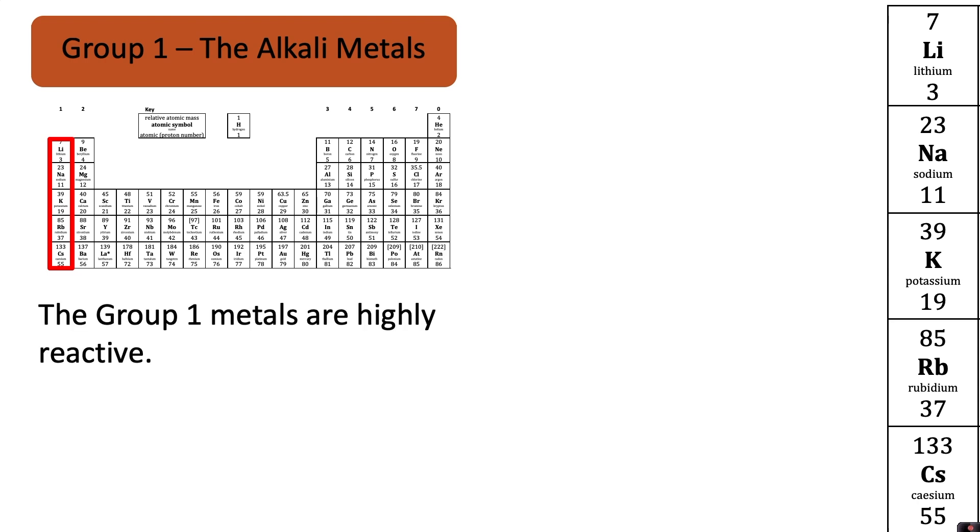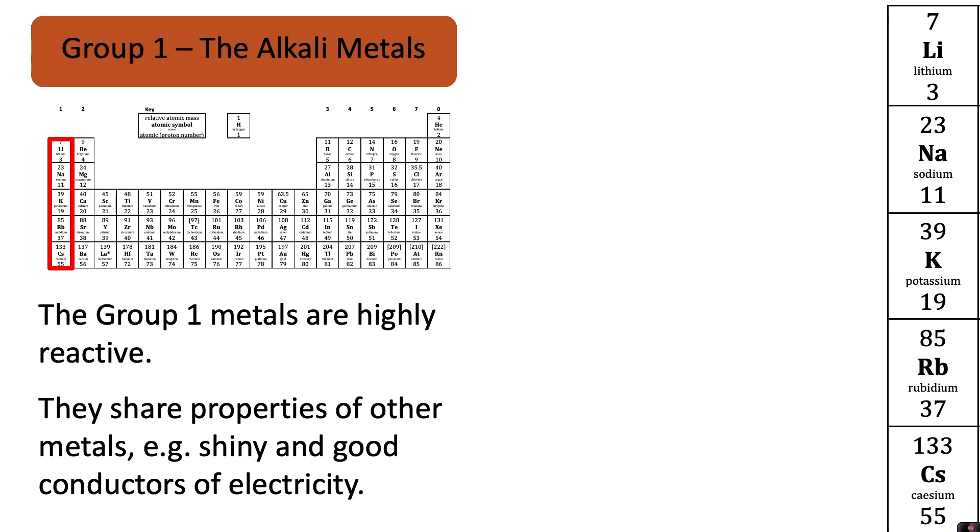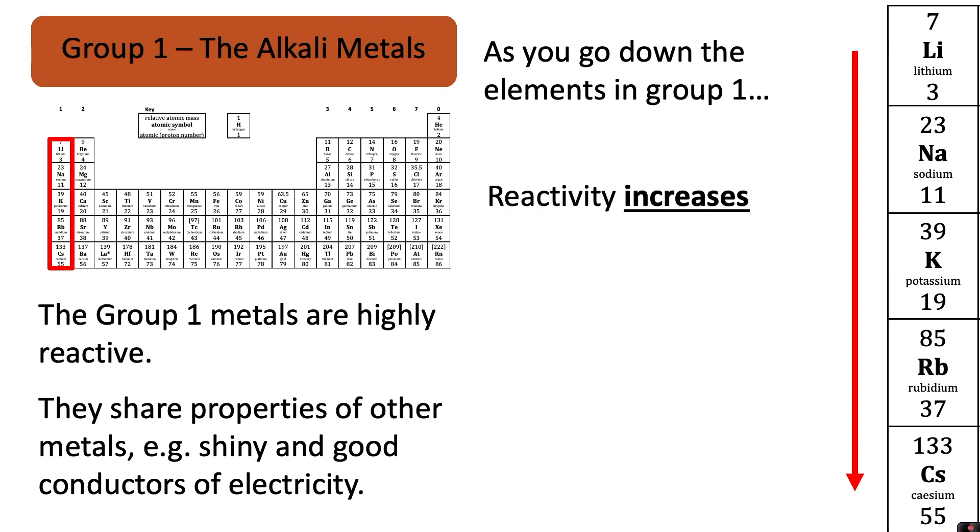The group one metals are highly reactive. They share properties of other metals. For example they're shiny and good conductors of electricity. As you go down the elements in group one reactivity increases, melting point decreases and boiling point decreases.